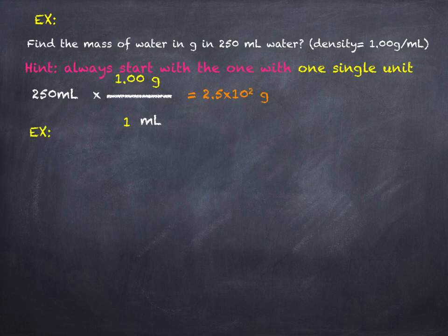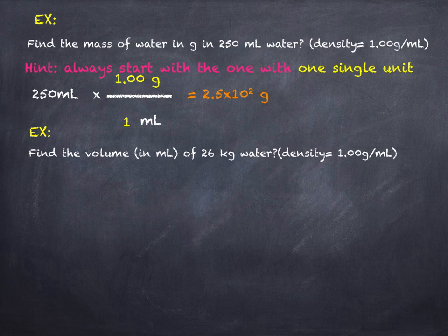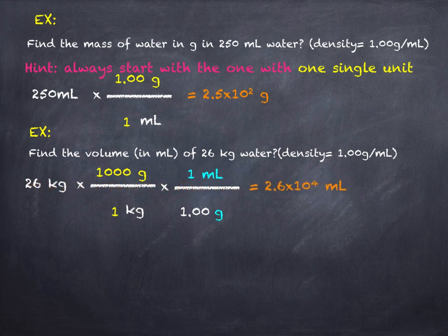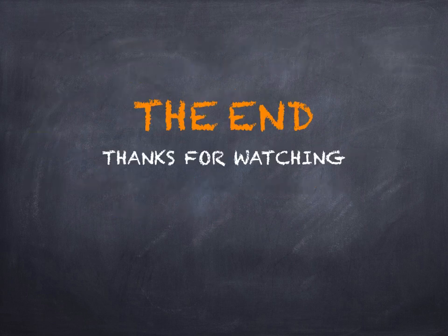Here's another example: finding the volume of 26 kilograms of water using the density of water. Since the density is expressed in grams, we first convert kilograms to grams — start with 26 kg, cancel kilograms and convert to grams. Then put grams on the bottom and milliliters on top using the density ratio. Kilograms and grams cancel out, and we end up with the answer in milliliters of water. That's it — I hope this video was useful. Thanks for watching, see you soon, bye!